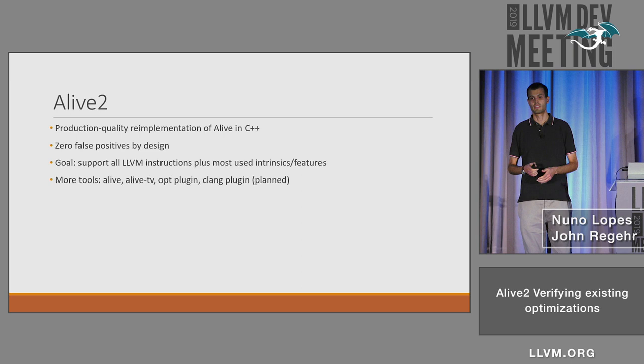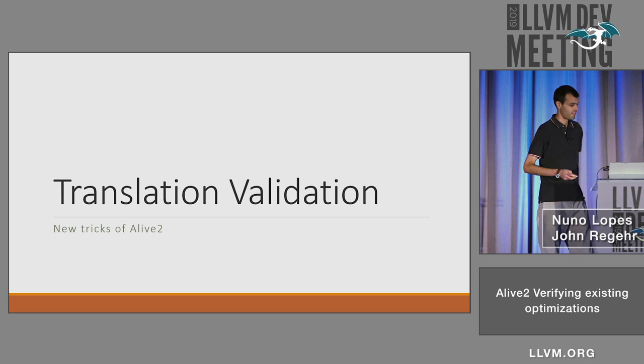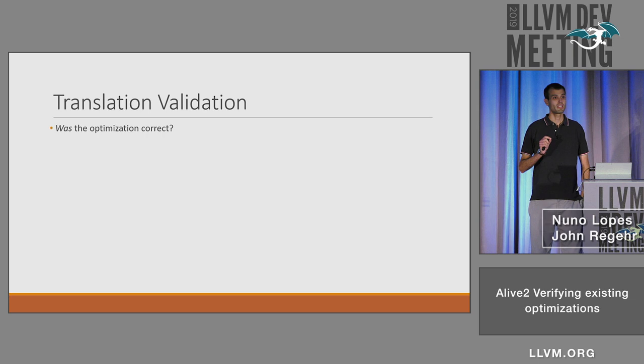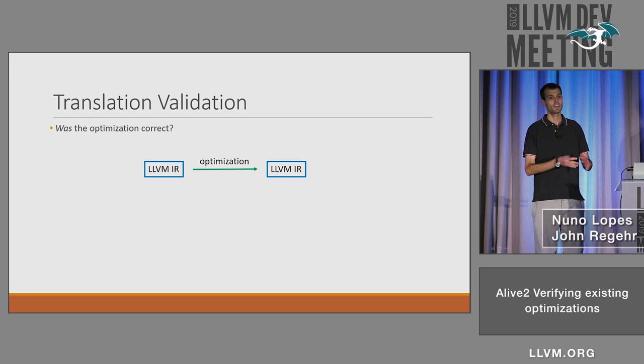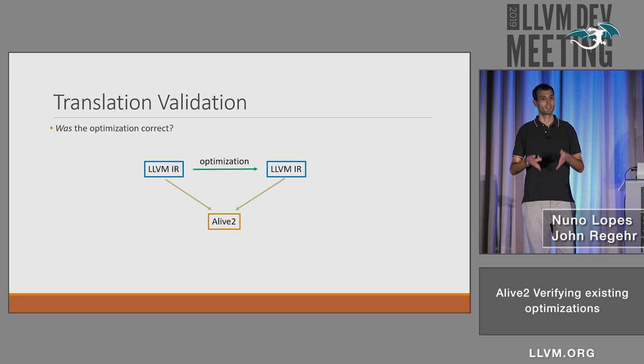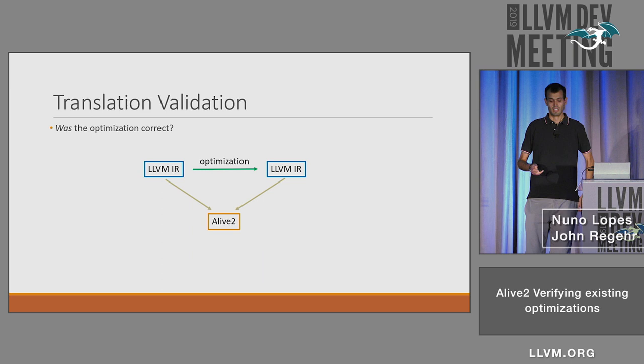We have these new tools that I'll present on the next few slides. Translation validation is the key new feature of Alive 2. It asks the question: was the optimization correct? As opposed to: is it correct in general? The idea is, if you run an optimization — you take an IR, optimize it to get an optimized IR — you can feed these two into Alive, and it will tell you if this specific optimization on this specific program was correct. This is translation validation.